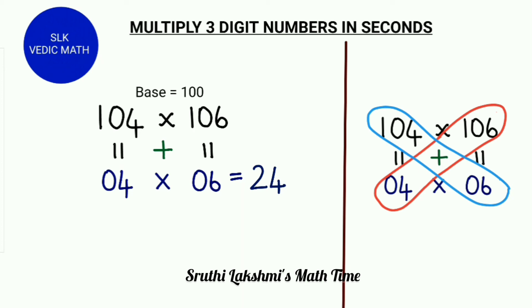Now we cross add, meaning we do 106 plus 4 and 104 plus 6. They both give the same answer, which is 110. So we write 110.